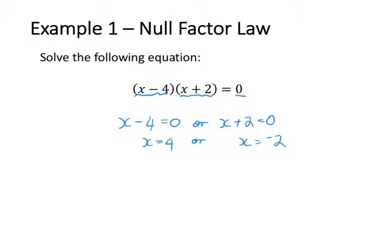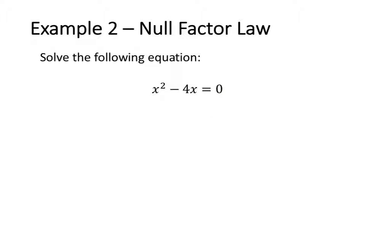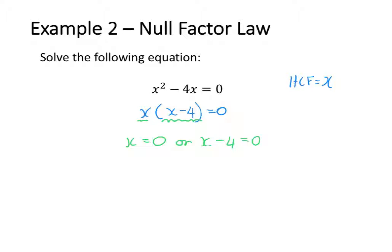In my second example, I want to solve the equation x squared minus 4x equals zero. My first step is to factorise that expression by taking out a highest common factor of x. So my factorised equation is going to be x(x minus 4) equals zero. Now that I've factorised it, I can apply the null factor law. So I know that x equals zero or x minus 4 is equal to zero.